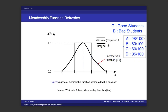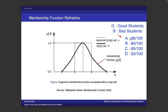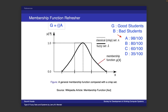Now we have some students and some sets. What we're trying to do is encapsulate these students in these sets — allot each student to a certain set. We'll make use of fuzzy theory for this. Our fuzzy set G is going to look like this: student A scored 98 marks, so he feels like a good student. Let's allot some membership value to him — I'm 0.9 sure that he belongs in the good students category.